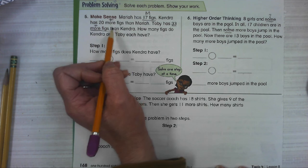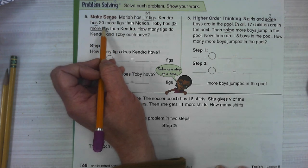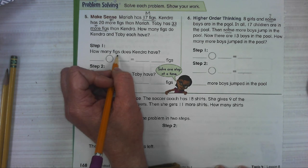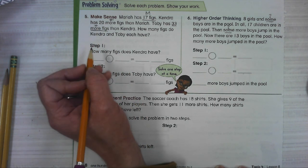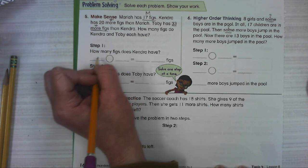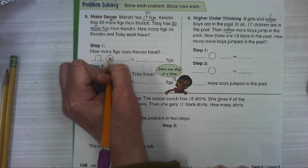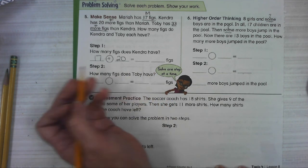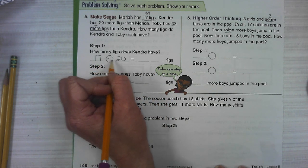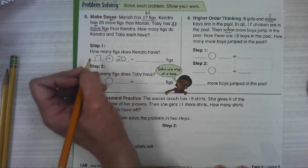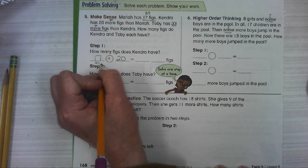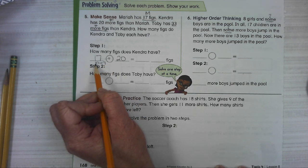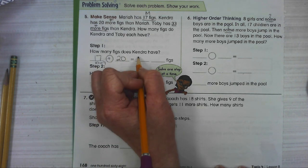Kendra has more figs than Mariah. She has 20 more. So if we're figuring out how many figs Kendra has, we know that she has 20 more than Mariah. So whatever Mariah has plus 20. I wonder why we have two blanks. That's kind of weird. So 17 plus 20. I can actually do that with mental math because I know 17 is 10 plus 7. 20 plus 10 is 30. 30 plus 7 is 37.